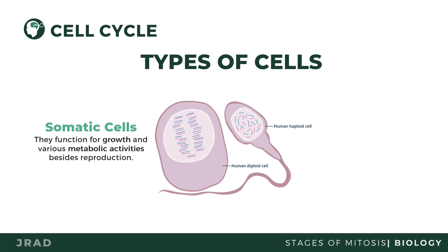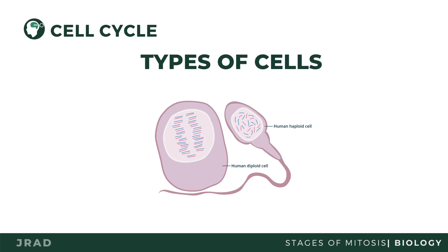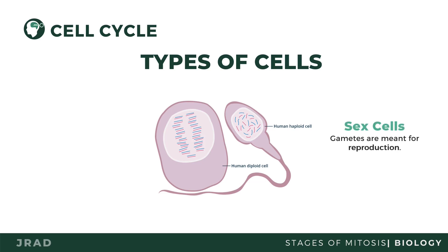Somatic cells include cells of the skin, bones, and muscles found in most animals. Sex cells are meant for reproduction and are sometimes called gametes. They include sperm cells in males and egg cells in females, and they have half of the complete set of chromosomes.